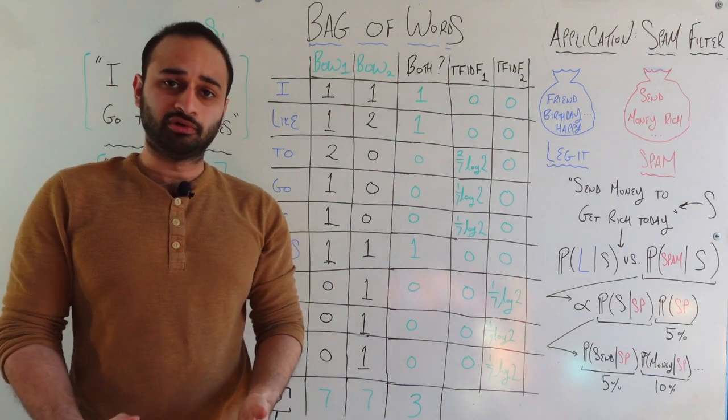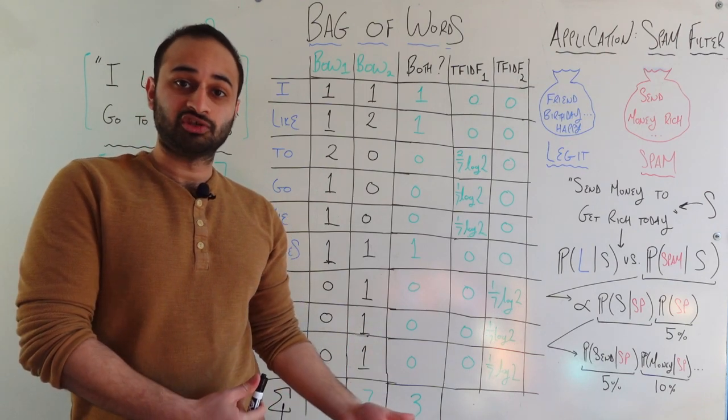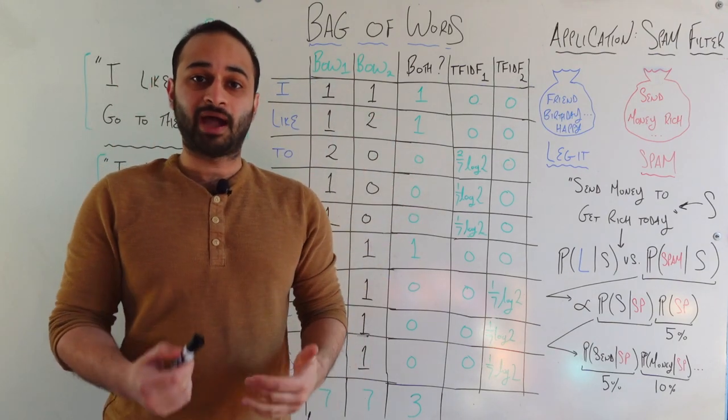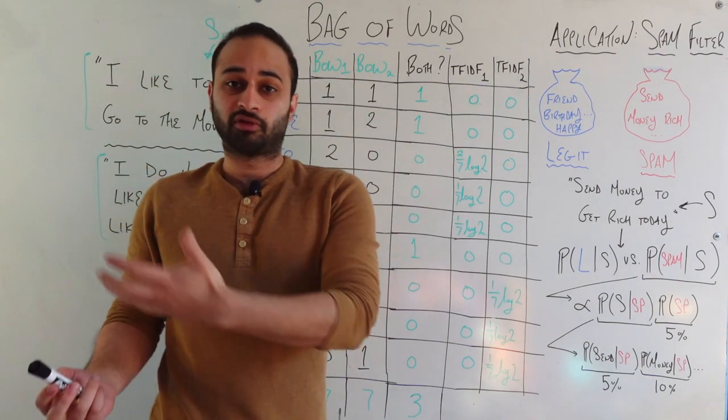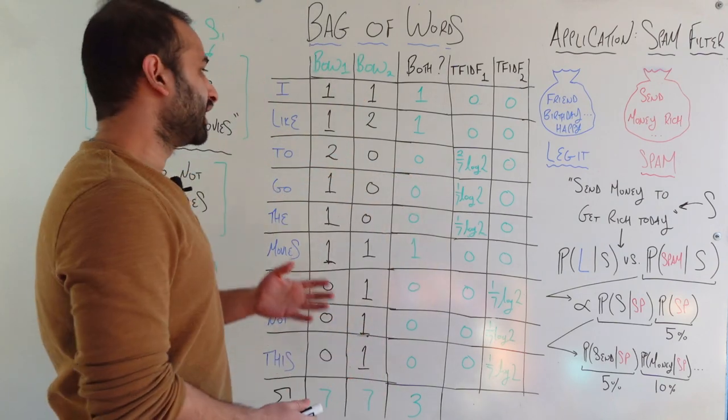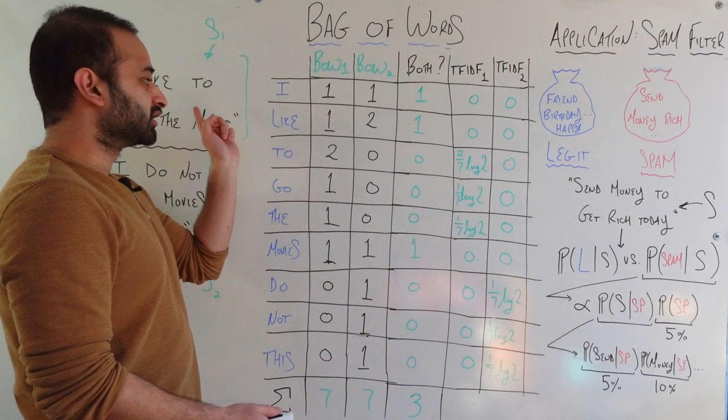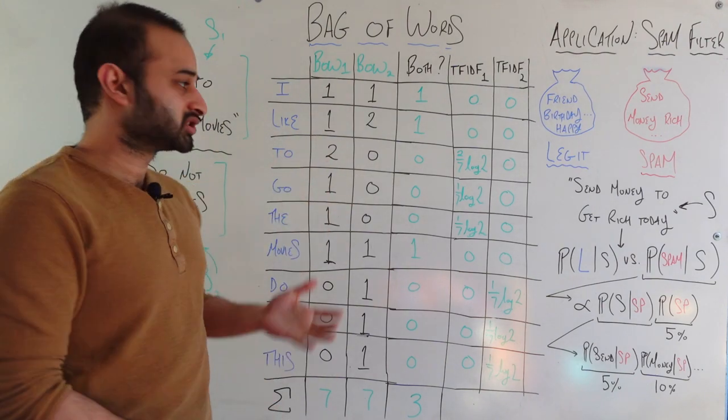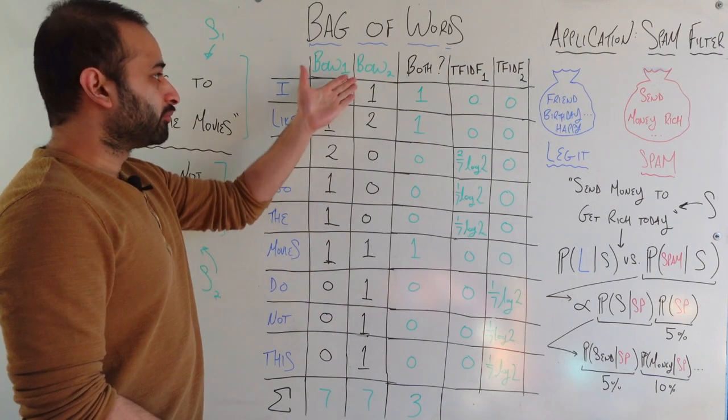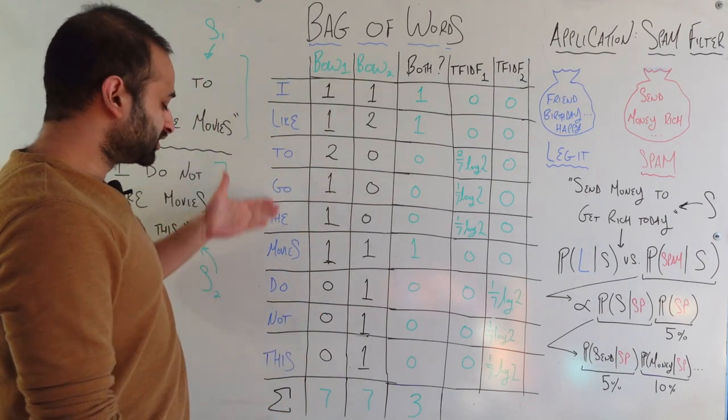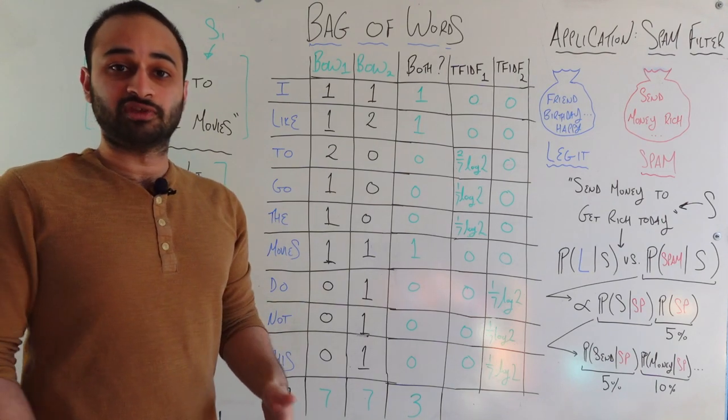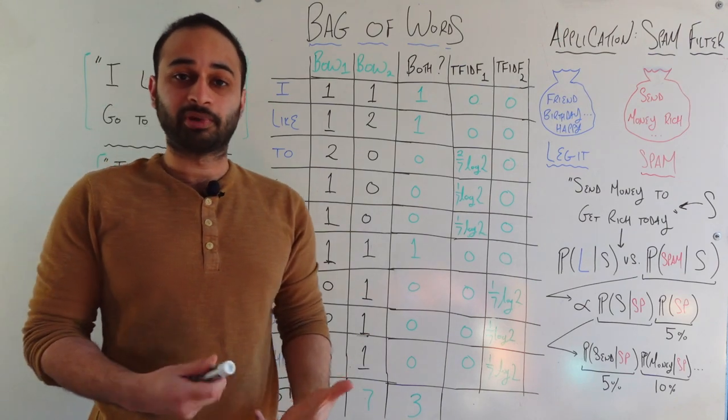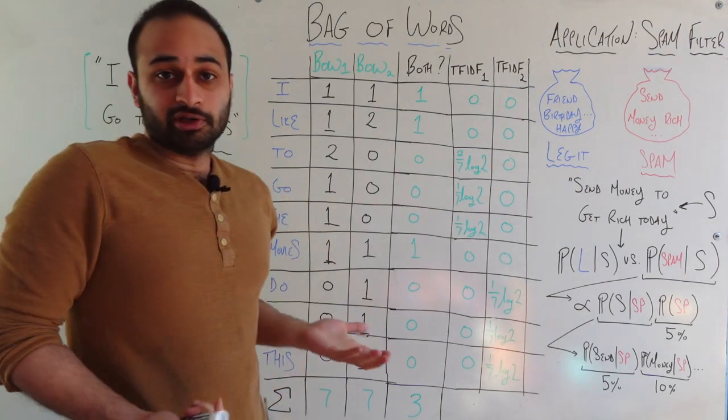And now simply what we do is just count the number of times we see these words in either sentence. So the first column, BOW1, stands for the bag of words vector for the first sentence. And so the way to understand this is that the word I appears once in this sentence. The word like appears once in this sentence. The word to appears twice in this sentence. And so on and so on. And bag of words 2 is very similar. Just counts the number of times each of these words appears in the second sentence. And so we have several zeros as well because some words don't appear in either sentence. And so that's literally it.